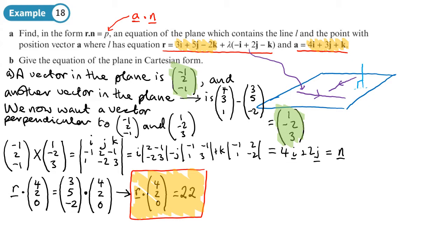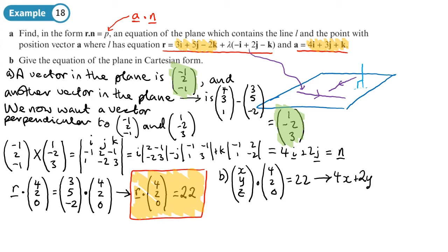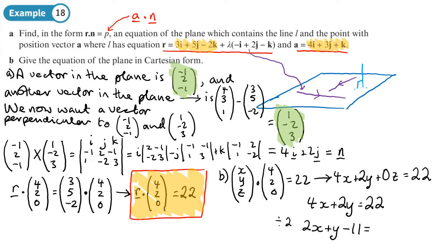For part B, to write the equation of the plane in Cartesian form, we replace R with (x, y, z). So (x, y, z) dot (4, 2, 0) equals 22 gives us 4x plus 2y equals 22. We could divide everything by 2 and rearrange to get 2x plus y minus 11 equals 0. There are different equivalent ways to write the equation of that plane.